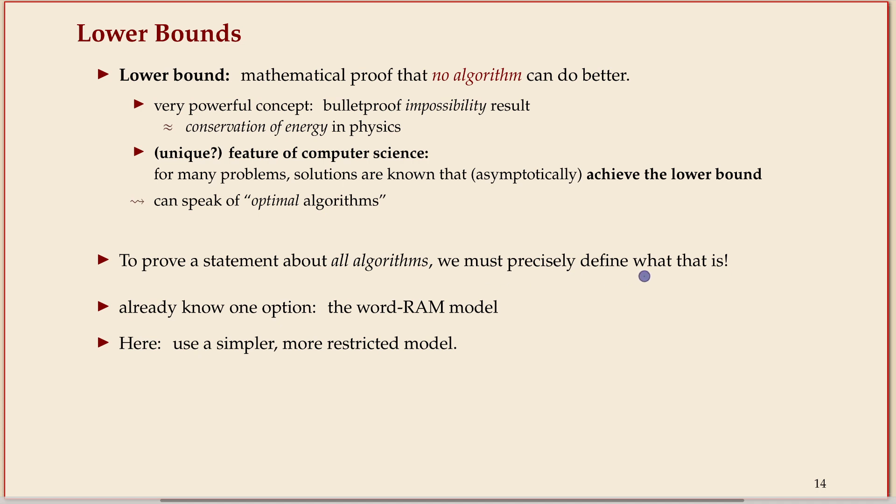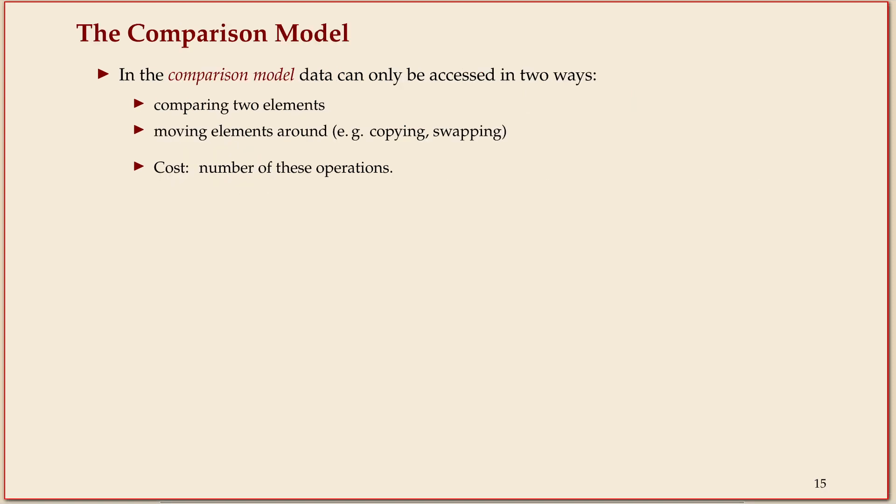In particular, we need a notion to say what are all possible algorithms. So any lower bound assumes a model of computation necessarily. It could be the RAM model that we discussed for analyzing algorithms, but often lower bounds restrict computation to something even more primitive, just to make reasoning about the model easier. And that's what we'll do here as well.